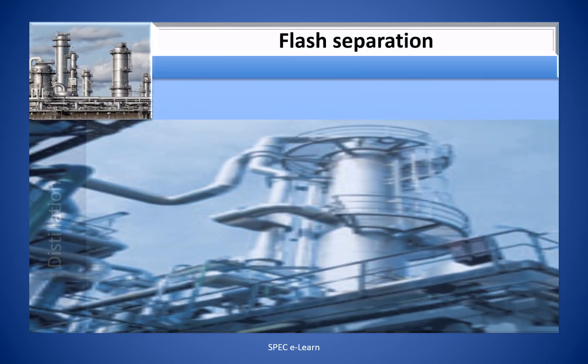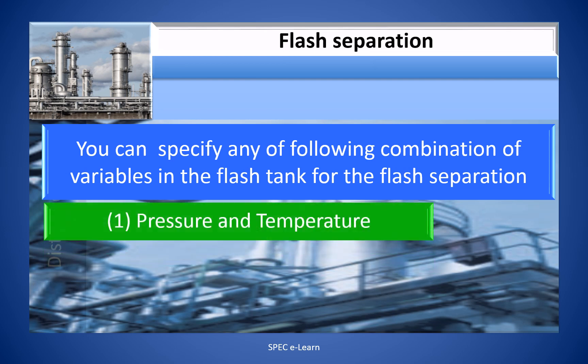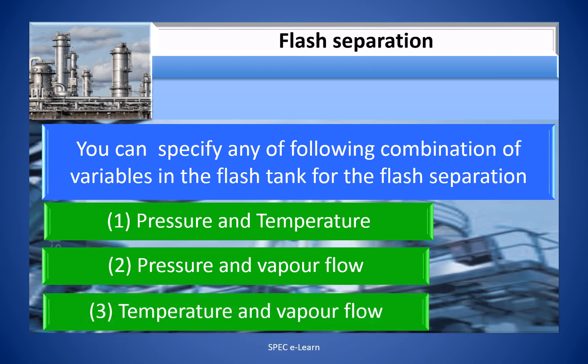You can specify any of the following combinational variables in the flash tank for the flash separation: 1. Pressure and temperature. 2. Pressure and vapor flow. 3. Temperature and vapor flow.